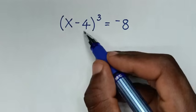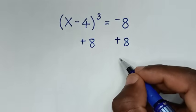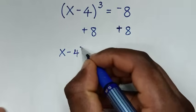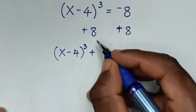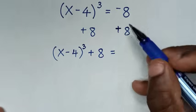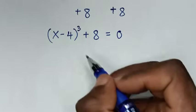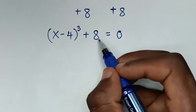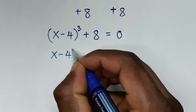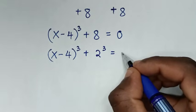We'll add 8 to both sides, so it will be (x - 4)³ + 8 = 0. On the right side, negative 8 plus 8 is 0. Now, 8 can be written as 2³, so we have (x - 4)³ + 2³ = 0.